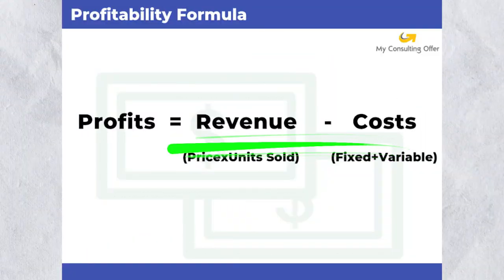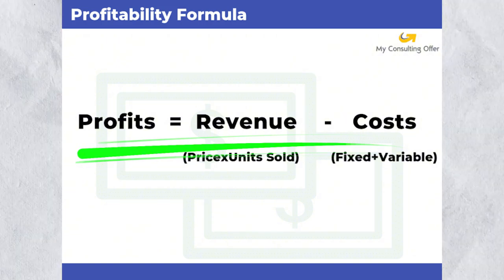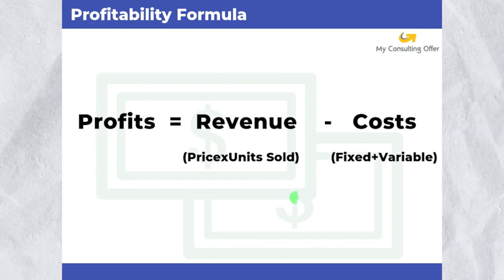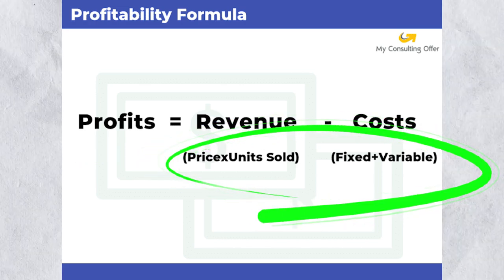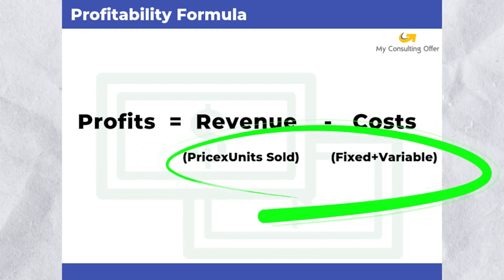As I mentioned, this is the profitability formula. Profits equal revenue minus cost. Profits equal revenue — which is the price times units sold — minus cost: fixed and variable. At the highest level it's pretty simple, but the equation doesn't provide a tremendous amount of insight at this high level. Both costs and revenues can be broken down further.